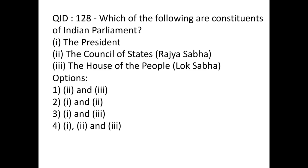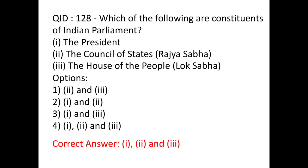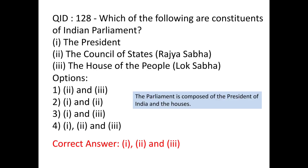Which of the following are constituents of the Indian Parliament? The Indian Parliament is composed of 3 things: one is the President of India, the second is the Council of States which is the Upper House, and the third is the House of the People which is the Lower House. Remember, the President is also a part of the Indian Parliament. Parliament is composed of the President of India and the two houses.